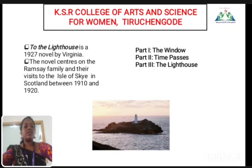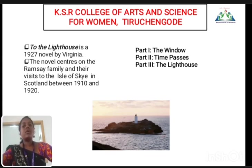Next we will see the title To the Lighthouse. It is Virginia Woolf's 5th novel. In this, her most autobiographical novel, she captured the childhood longing and the delight of shifting relationships, conveying real life experience. The whole novel is divided into three parts.